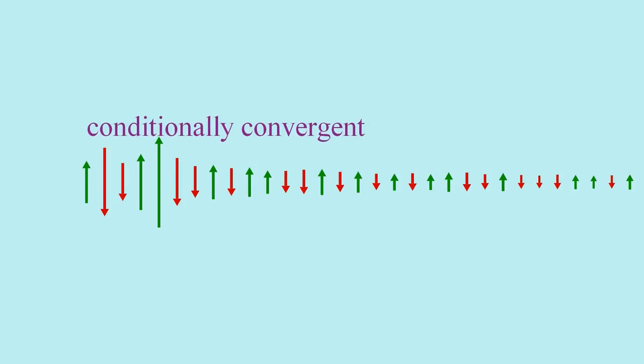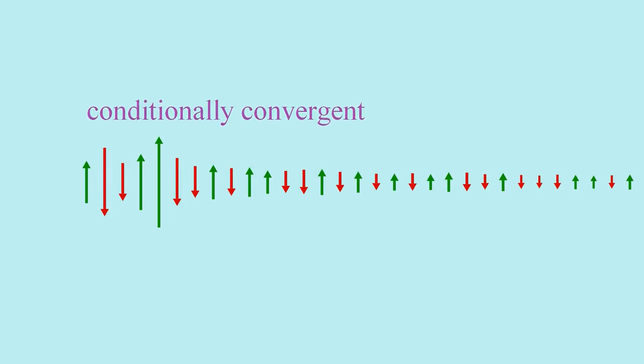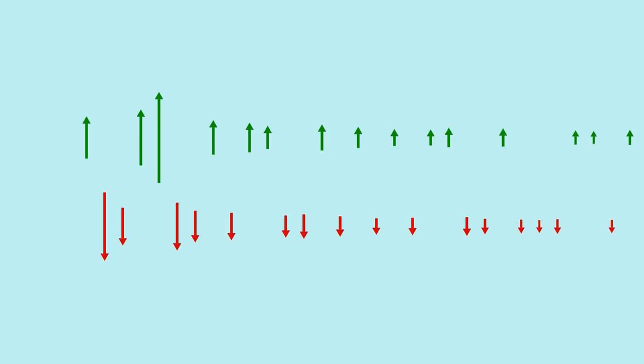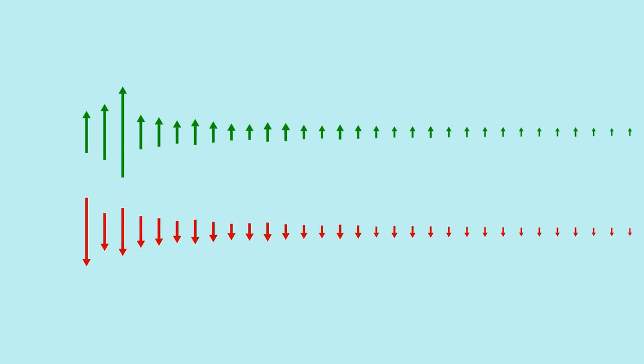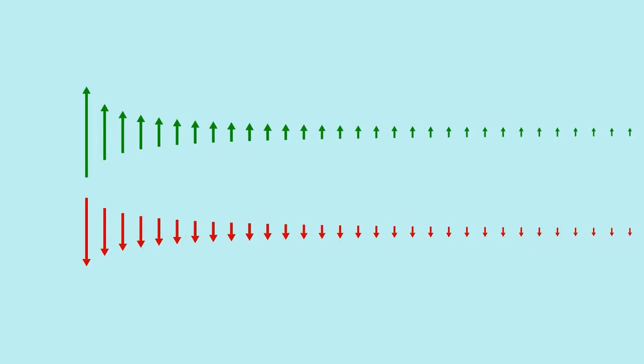So let's say we start with some arbitrary conditionally convergent series. Since we're going to be rearranging the terms, there's no reason to keep them in any particular order right now. So as a first step, let's separate the positive terms from the negative terms. Now, in both subsets, rearrange the terms so that they're in descending order of magnitude — that is, rearrange all the arrows in both groups, starting from the longest arrow, followed by the next longest, and so on.